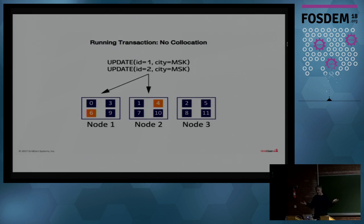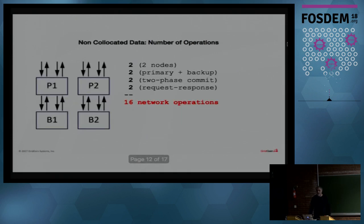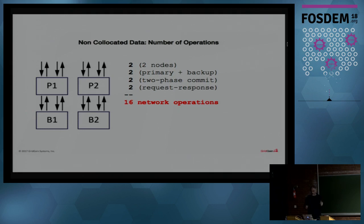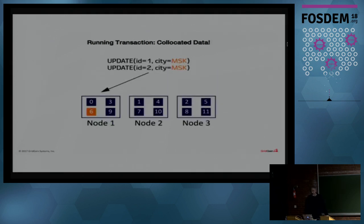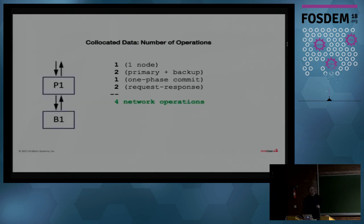If those accounts are distributed across two nodes, that involves an awful lot of messages — up to 16 network operations, particularly with two-phase commit, which involves prepare and commit messages and acknowledgements, and if we've got both primary and backup partitions. Even for a two-node cluster, that's quite heavy. Co-location helps achieve a reduction in traffic — we can reduce this back down to around four network operations in this simple case. We can take advantage of one-phase commit because of the particular architecture we've got.